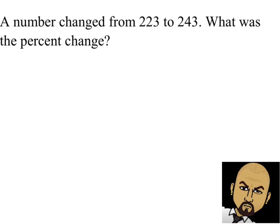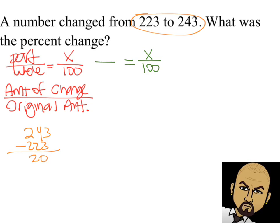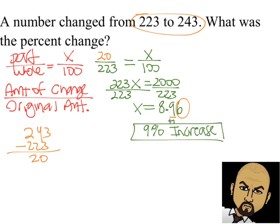Let's go ahead and do another problem. We're going from 223 to 243. We'll use our part divided by whole equals our percent, which is the amount of change divided by the original amount. We don't know our percent, so that's going to be x hundredths. Our original amount is 223, going to 243, so our amount of change is 20 — that's the part — and our whole is the original number, 223. We cross multiply and end up with 223x equals 20 times 100, which is 2000. Divide both sides by 223 and we get 8 and 96 hundredths. We round to the nearest tenth — looking at the hundredths we round up — so our final answer is a 9% increase.